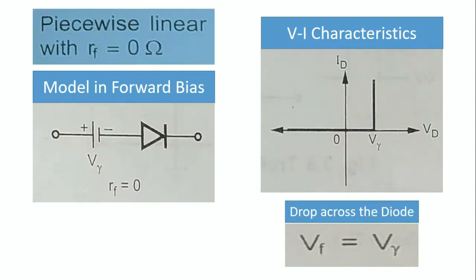The next model is the piecewise linear with resistance RF equal to zero ohms — that is, the forward resistance of the diode RF equals zero. Here we are considering only the cut-in voltage. The VI characteristics show that the diode gets forward biased after the cut-in voltage V gamma, and since RF equals zero, we get a straight vertical line. The drop across the diode is given as VF = V gamma.